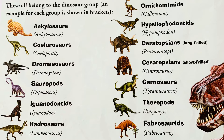Dinosaurs lived in the Mesozoic era, which lasted from 225 to 64 million years ago. The Mesozoic is divided into three periods: the Triassic, the Jurassic, and the Cretaceous.